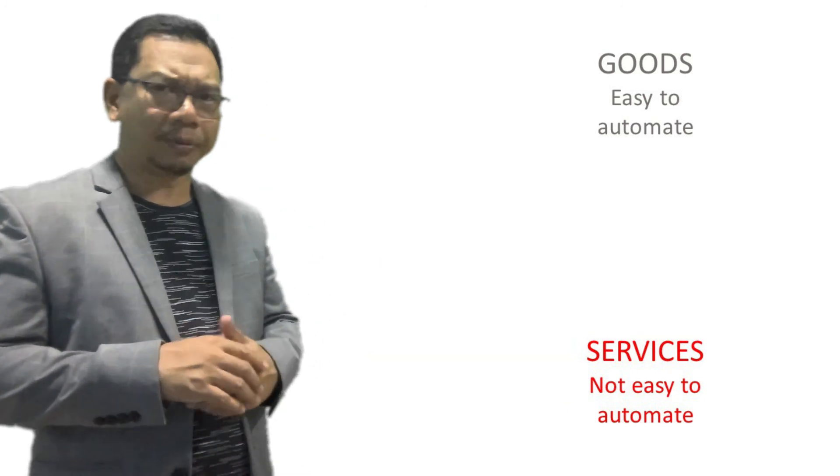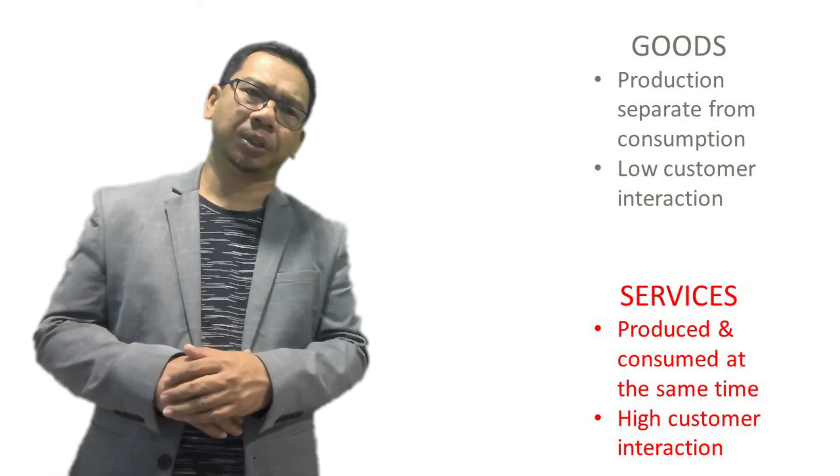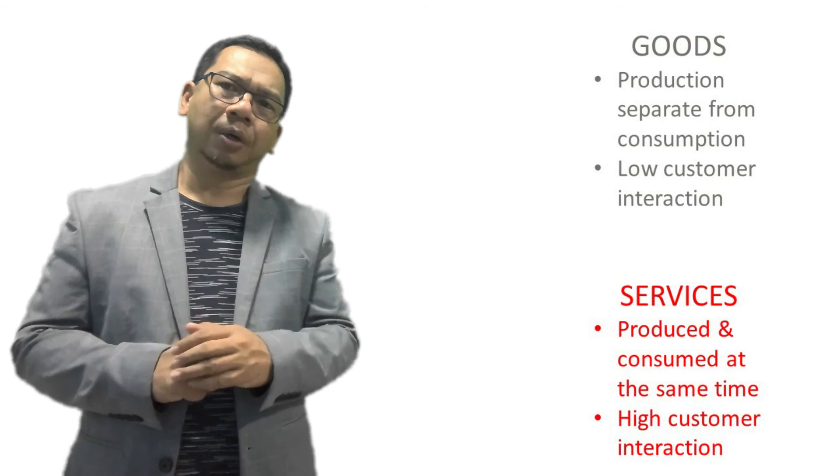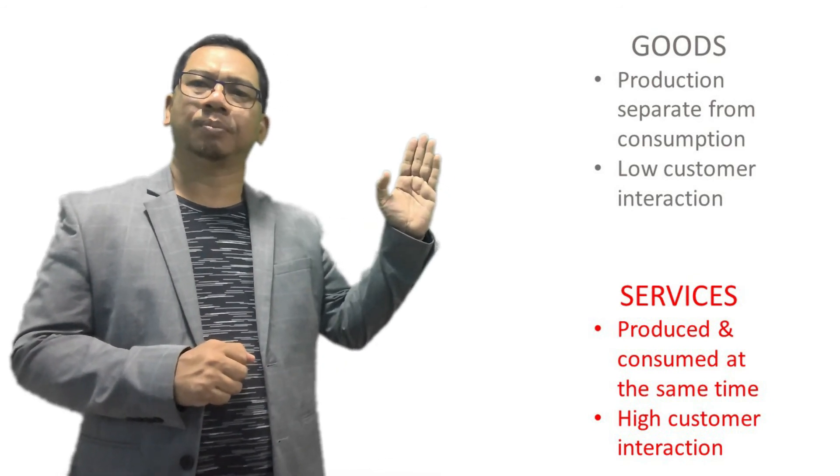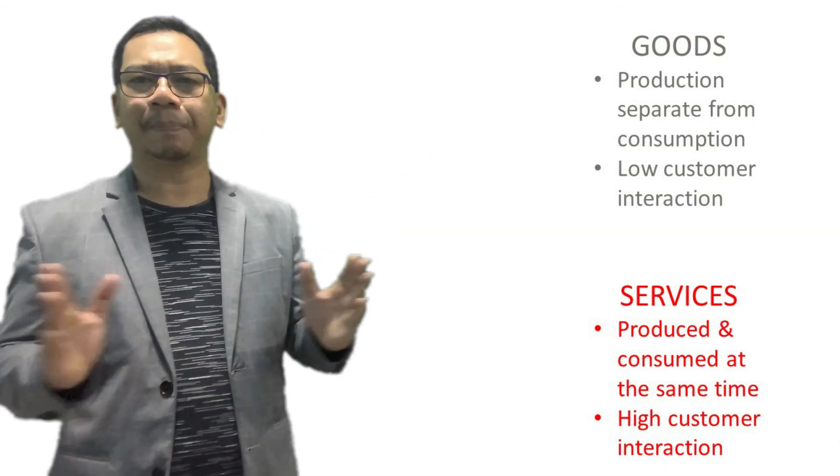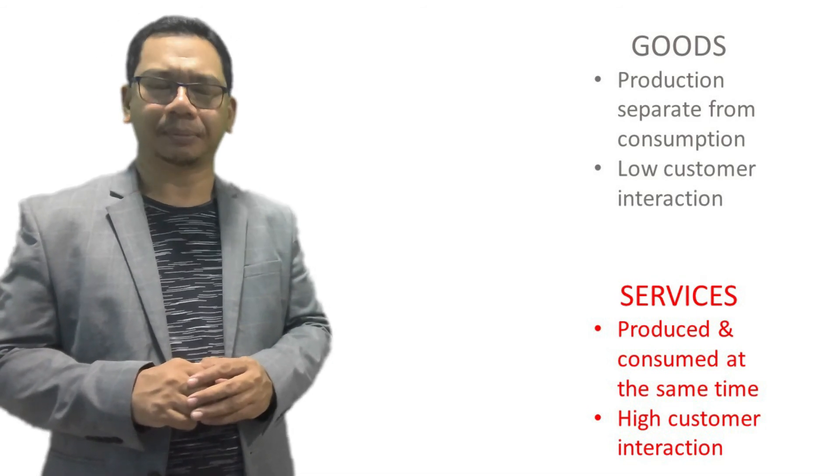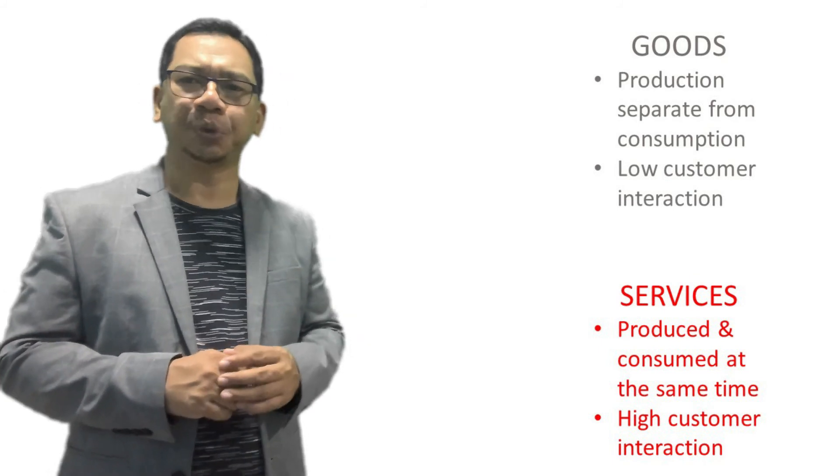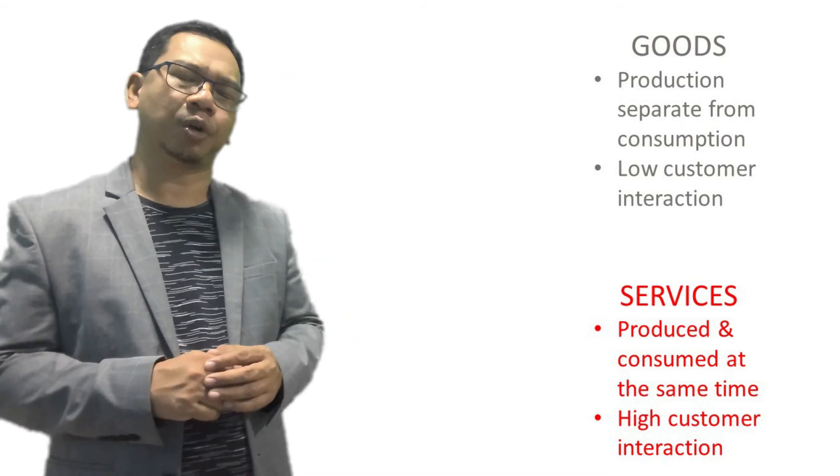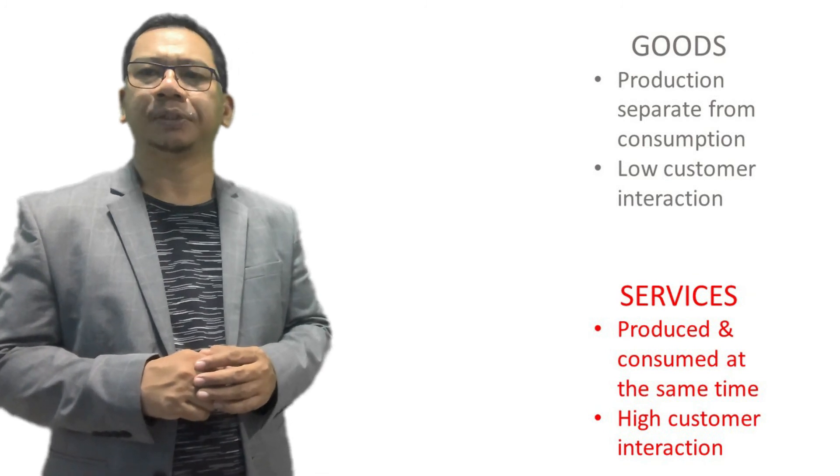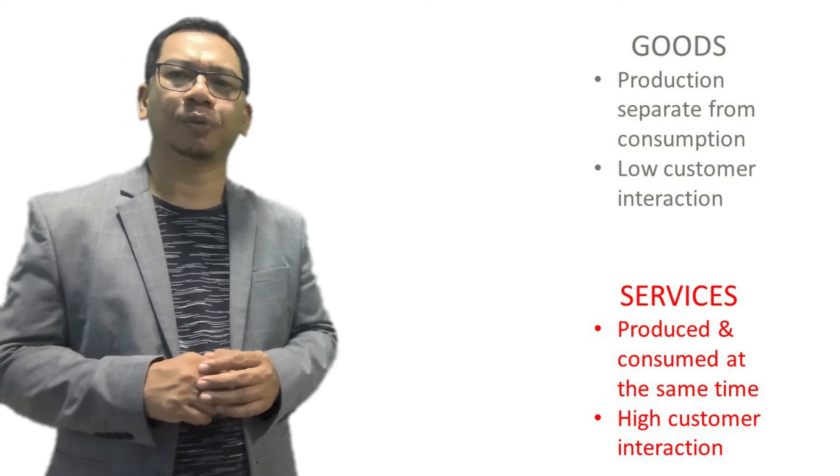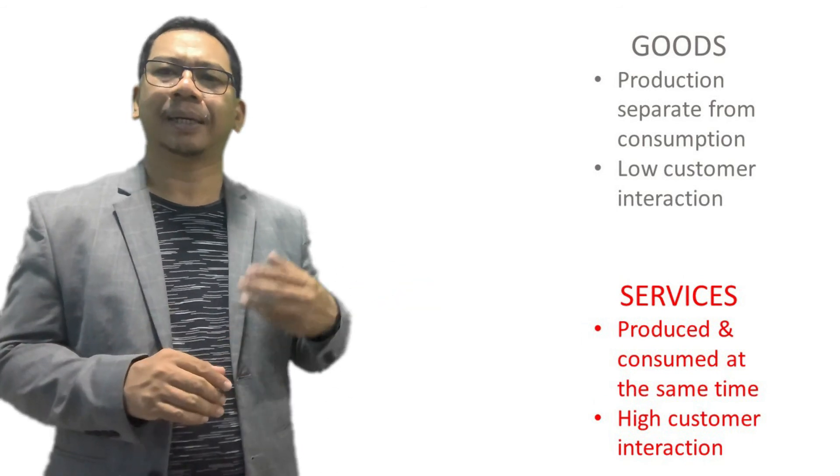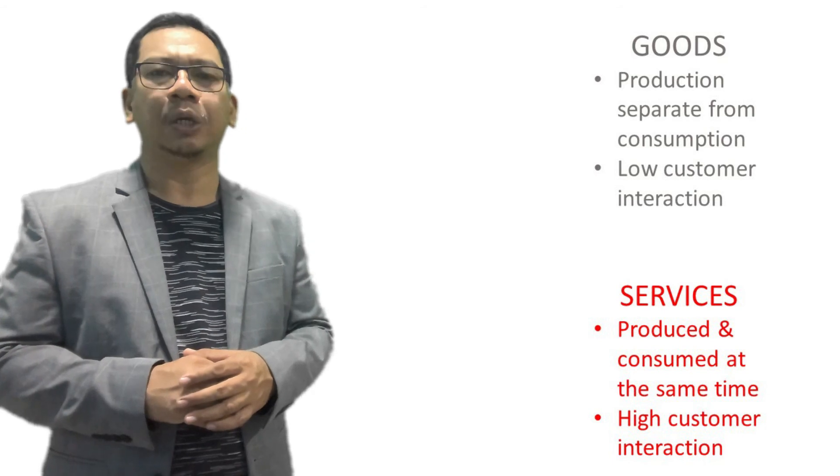The fifth one is the separation between production and consumption. For goods, production usually separate from consumption. Customers only can buy products and use products after production completed. Since the production and consumption happen at two different times, the customer interaction is relatively low.